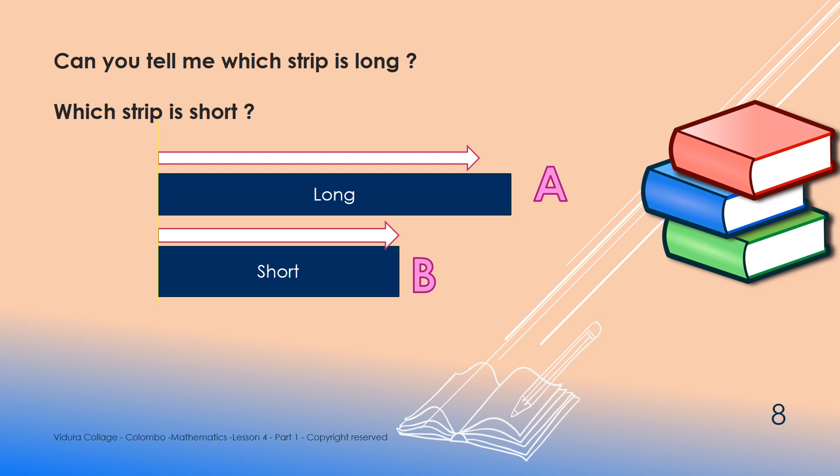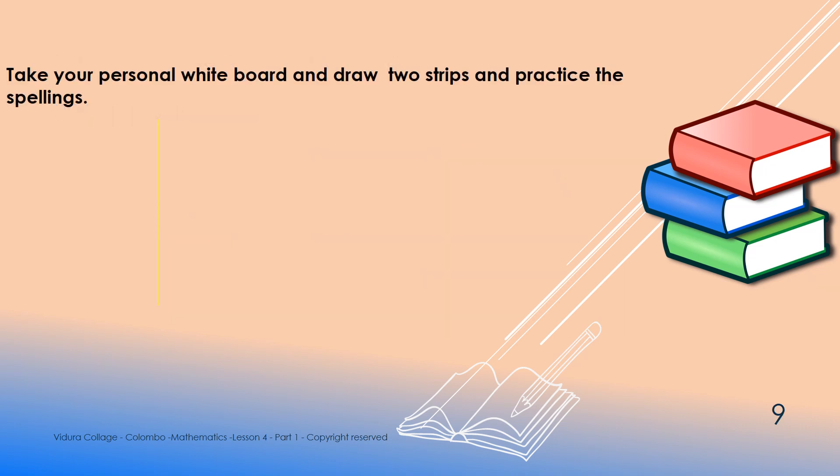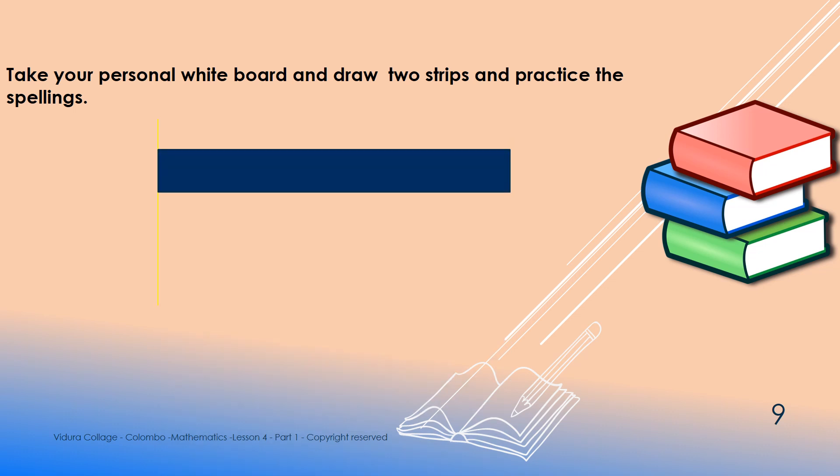Learning about long and short is not enough. We have to learn how to draw them and how to write the spellings also. Let's learn that. Please take your personal whiteboard and get ready to do an activity. First, draw a long line on your board and name it long. Shall we write the word long? Ok, write with me.